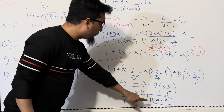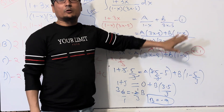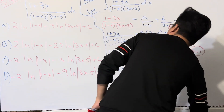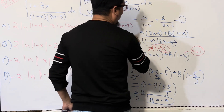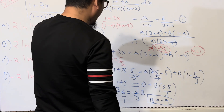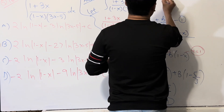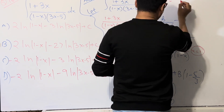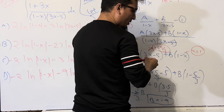Now we have found both values: A = -2 and B = -9. We substitute these back into the partial fraction decomposition from equation one.